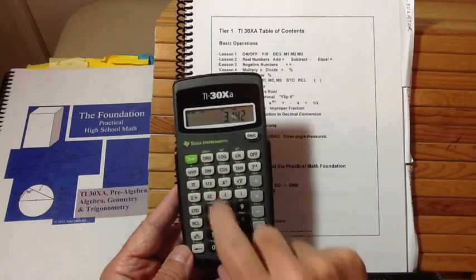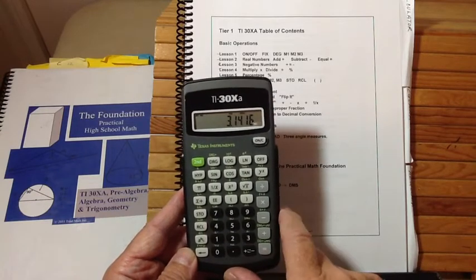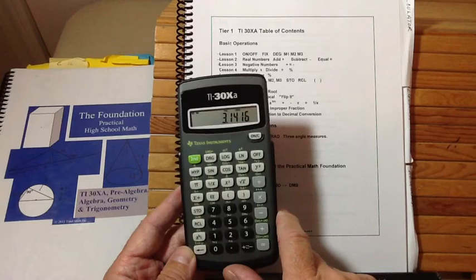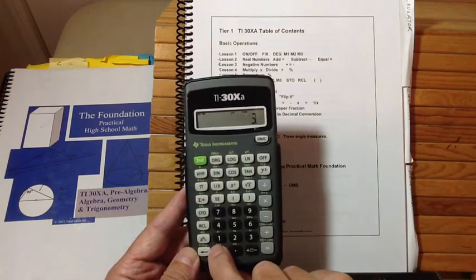Or if you want to see four decimal places, you would hit fix, period, four. And, in fact, you can show any number of decimal places this way. You can show no decimal places. There's just three.